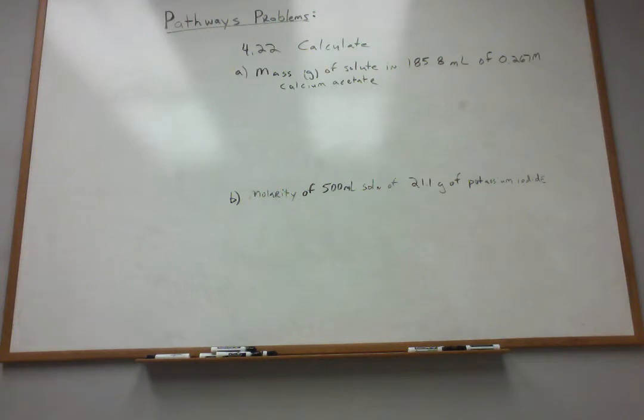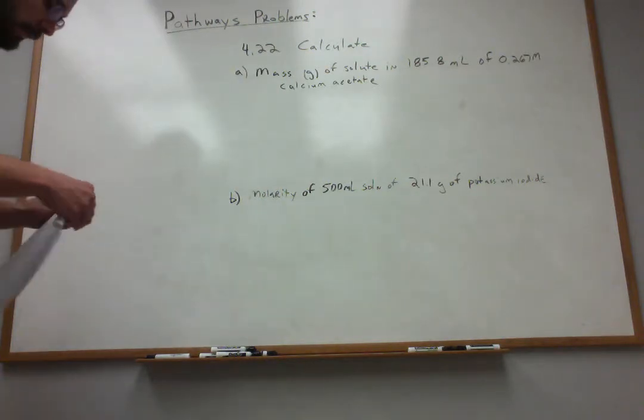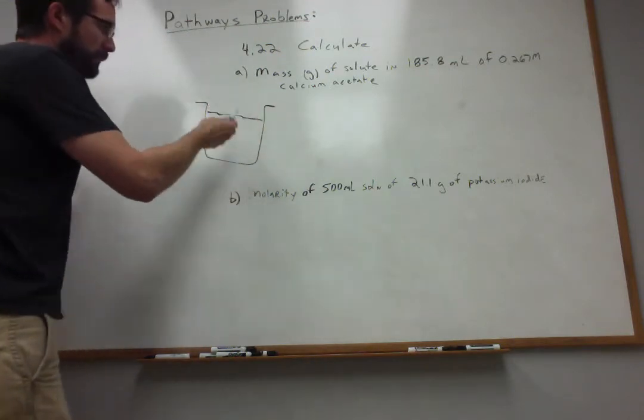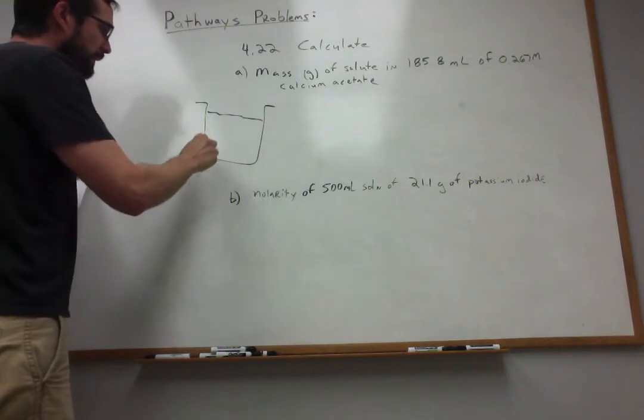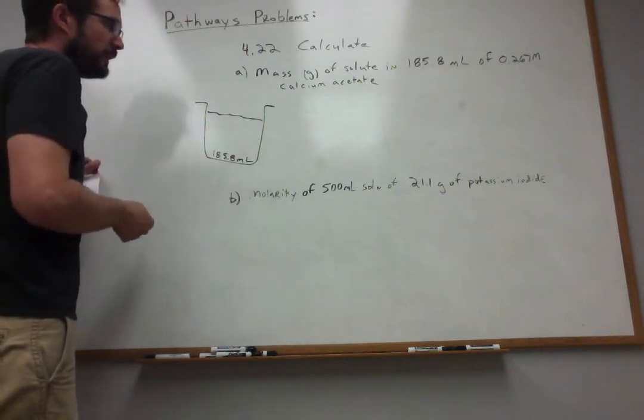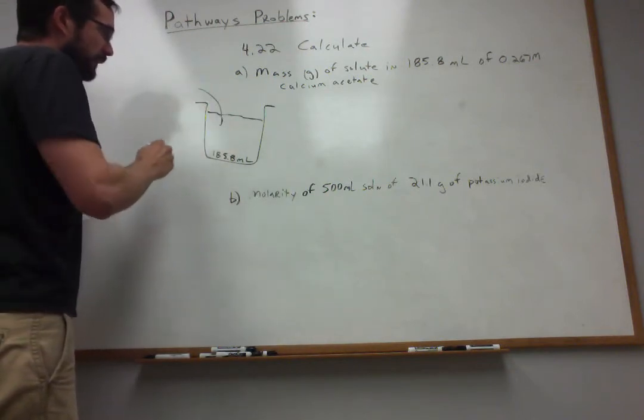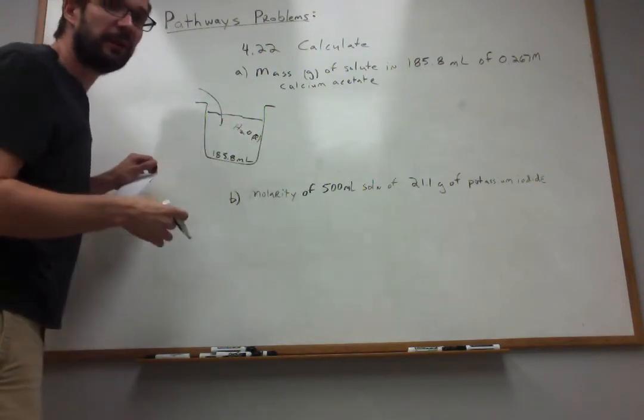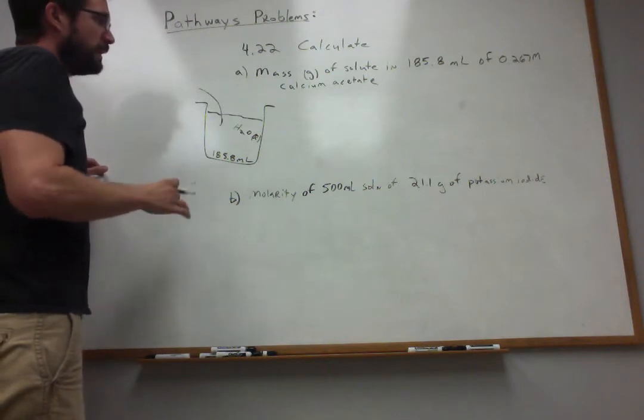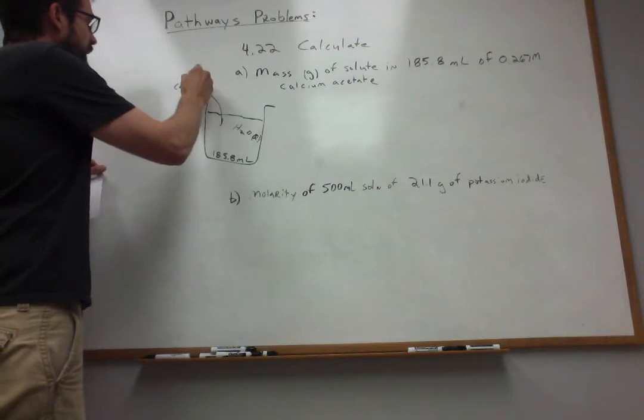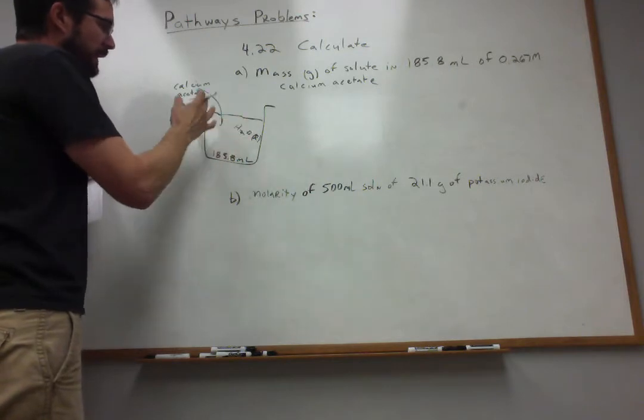Okay, so we've got a solution here. We've got a beaker full of 185.8 milliliters of solution. And the ingredients of that solution, certainly water will be present. Liquid water is going to be our solvent, it's present in the largest quantity, determines the phase. But it's not just pure water, because what we've done is we've added some calcium acetate, an ionic compound into that water, and it all dissolves up.